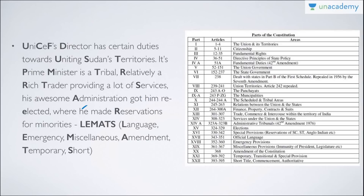Part 17 is Official Languages. Part 18 is Emergency Provisions. Part 19 is Miscellaneous Provisions. Part 20 is Amendment of the Constitution. Part 21 is Temporary, Transitional and Special Provisions. Part 22 is Short Title, Commencement and Authoritative. This story will help you remember all the parts — thank you for watching this lesson, have an awesome day!